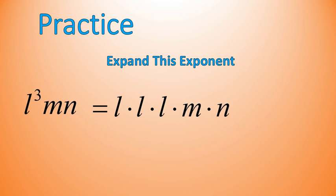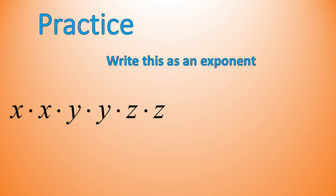A little more practice — go ahead and try converting from expanded form into exponent form. x times x would be x squared, y times y is y squared, z times z is z squared, so it should be x squared y squared z squared. Notice again — the biggest mistake people make is to write x, y, z to the power of 6, which is not the same thing. You need to keep each base separated, otherwise you will not get the correct answer.